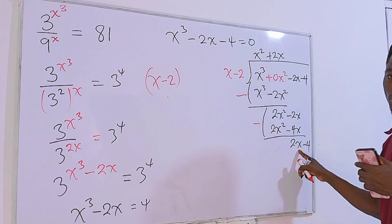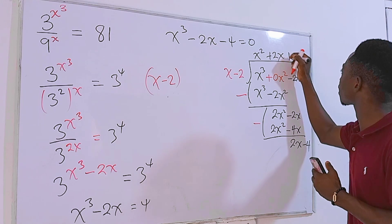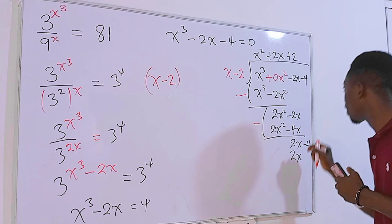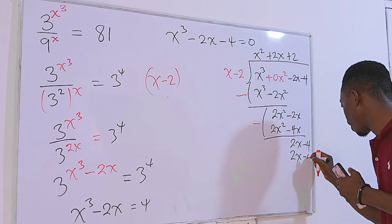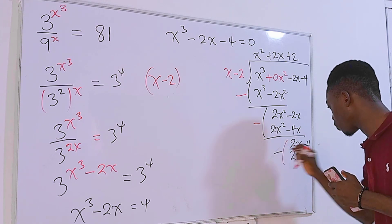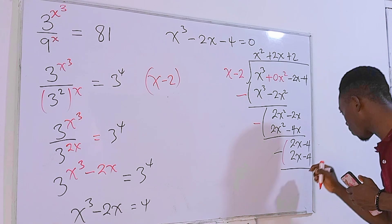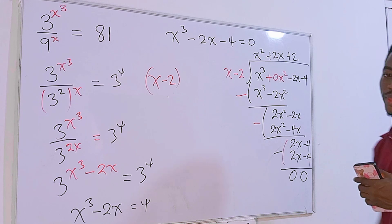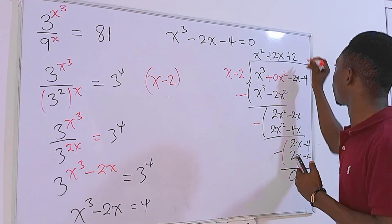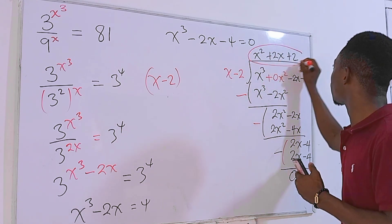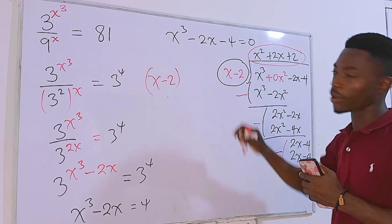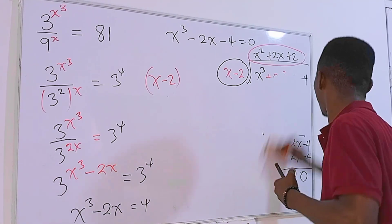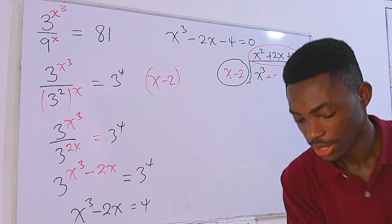What times x gives 2x? That's plus 2. Then 2 times x is 2x, and 2 times negative 2 is minus 4. Subtracting: 2x minus 2x is zero, and minus 4 minus (minus 4) is also zero. The remainder is zero, confirming the division is exact.